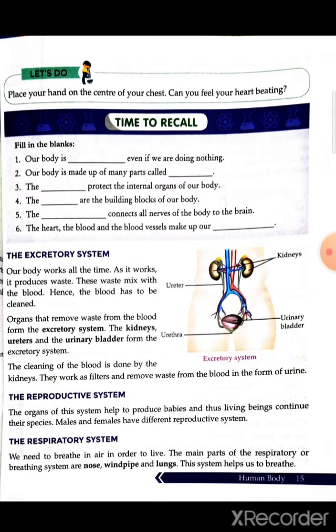Our kidneys are like filters of our body — just like how a water purifier purifies water, our kidneys purify the blood by removing impurities. The waste is then excreted in the form of urine and passed out of our body. The organs involved in the excretory system are the kidneys, urethra, and urinary bladder.